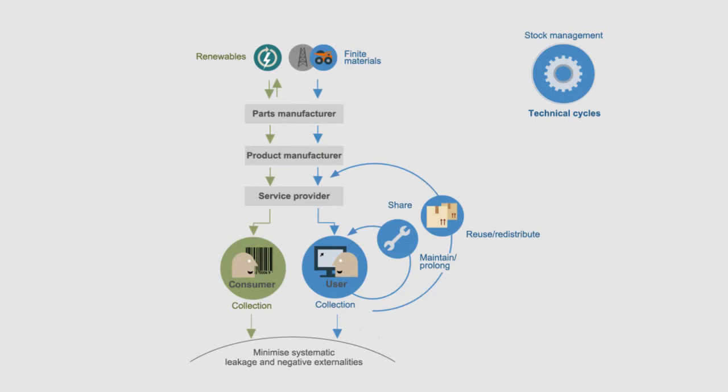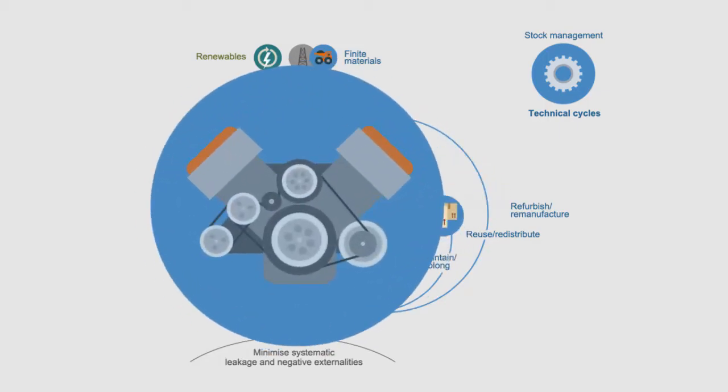Once a product can no longer be reused as is, most of its value can still be retained by refurbishing or remanufacturing it. For example, a car manufacturer can remanufacture the engine and other components of cars that are no longer usable.